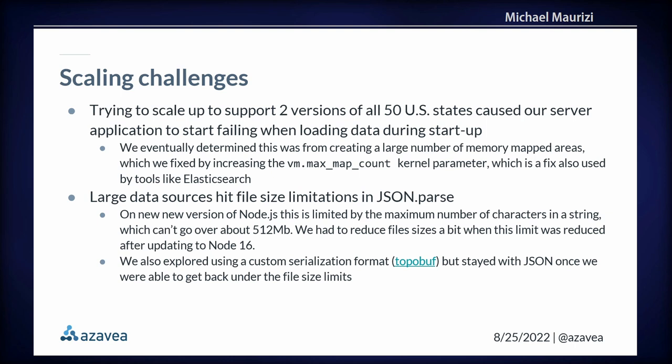We also discovered partway through the project that there is a 512 megabyte limit on the size of a string in Node.js — which we hit when we updated to Node 16. That limit had been lowered from around 2 gigabytes in a previous version, and we could no longer load our input files. We looked into switching to a custom serialization format, but instead ended up stripping data we didn't need out of the topoJSON and putting it into a sidecar file, which got us back under the file size limits.